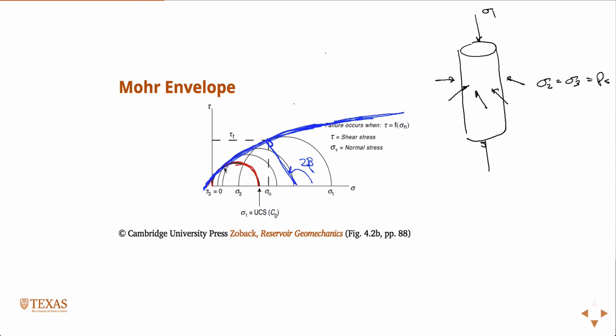So, for example, for a fixed sigma 3, which would be like an external confining pressure, if I then increased sigma 1, the circle would grow. And at some point, it would touch that line and the material would fail. So this is a model to predict material failure.